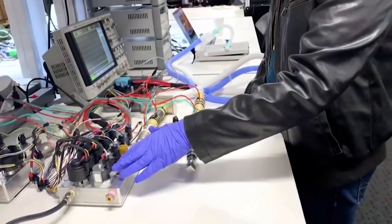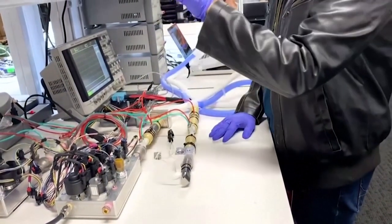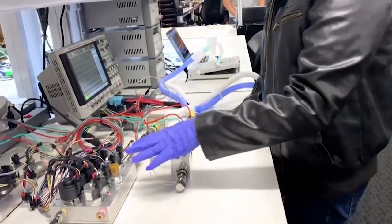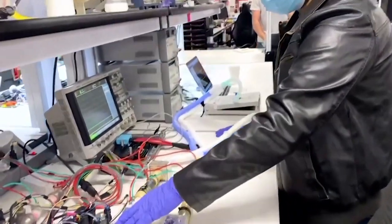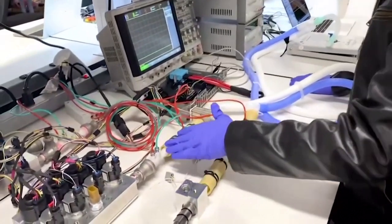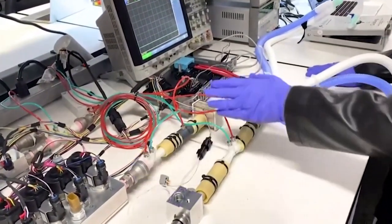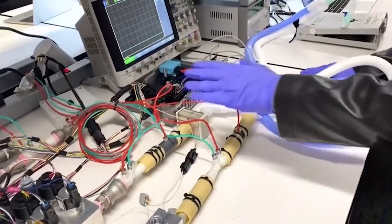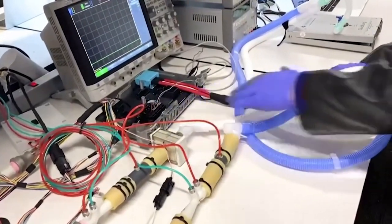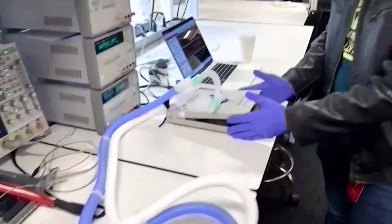This unit is used to create a waveform, the pressure waveform. Then the air goes through the control board which has sensors. So this is a flow sensor, this is a pressure sensor. Then it goes to a filter, it goes to a test lung.